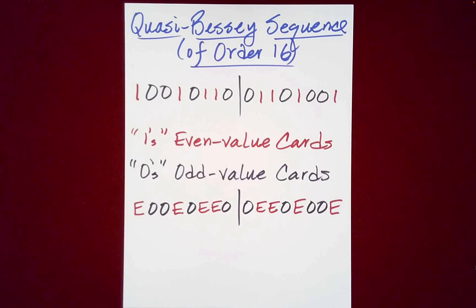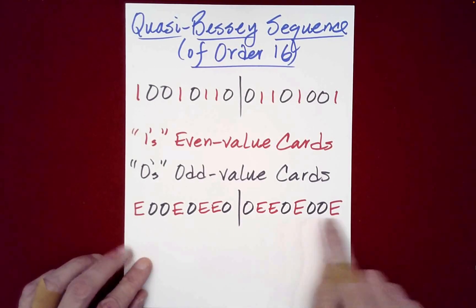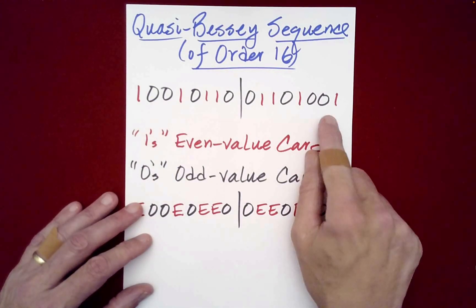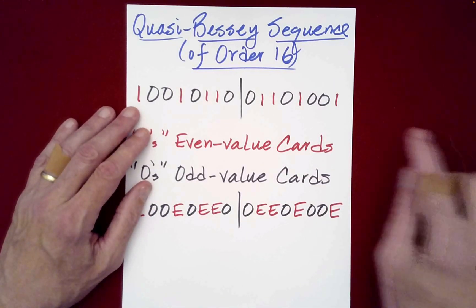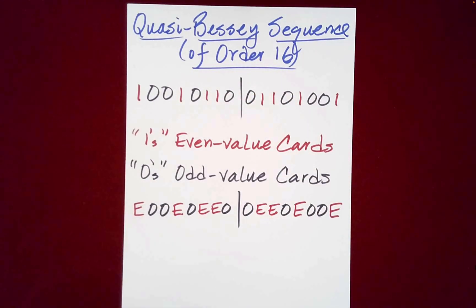So if you go back to that original spread of 16 cards, you'll see that it has this structure. And this structure is impervious to virtually all of the systematic random mixing procedures we use today. And so I'll include a link in the description to quasi-Bessy sequences as well as Bessy sequences that talk about the invariance, the amazing property of this sequence to survive just tremendous mixing. And then once we preserve this, we apply the Hummer principle to it.